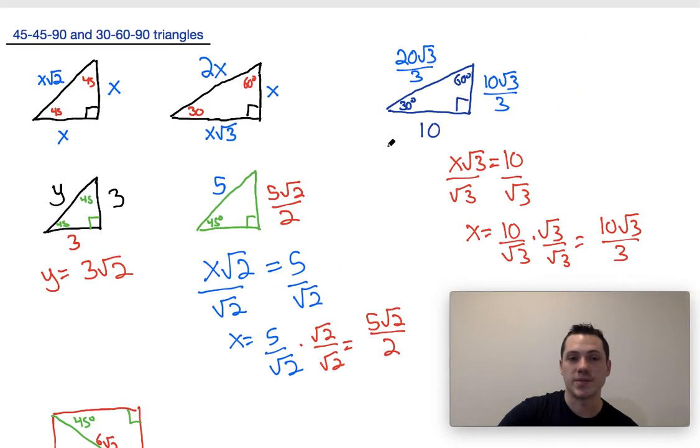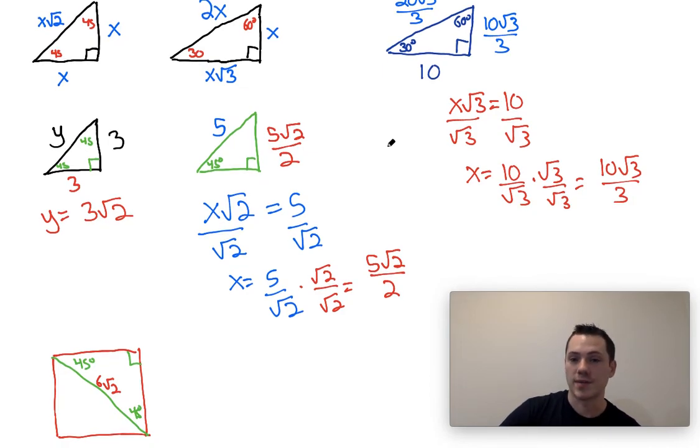We could then use the ratios provided up here to determine that if 6 root 2 is equal to x root 2, that x must equal 6. And that would tell us that the sides of the square are equal to 6. And we could figure out what, say, the perimeter of the square was now. We could figure out what the area of the square was by doing 6 times 6. A lot of different options.